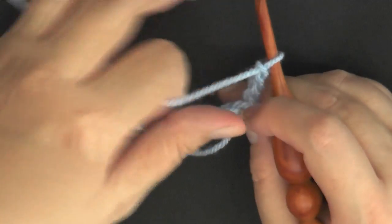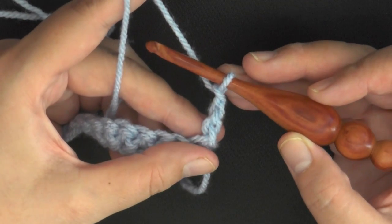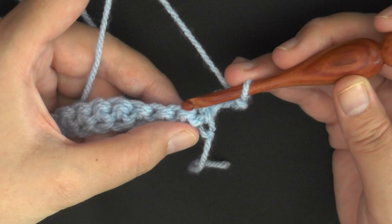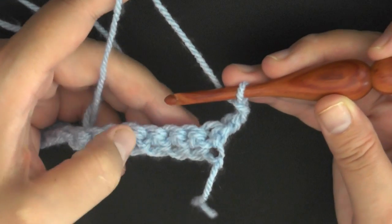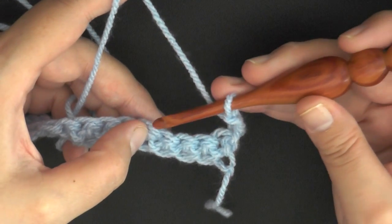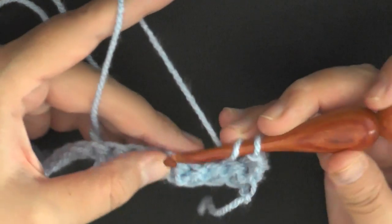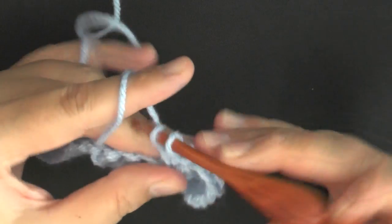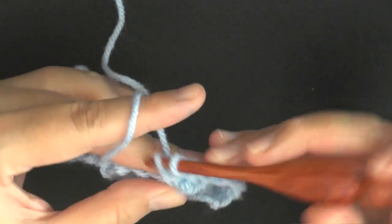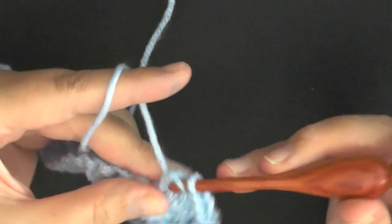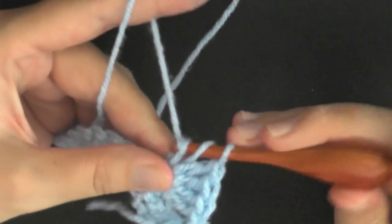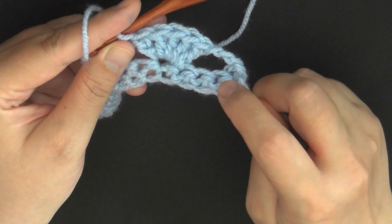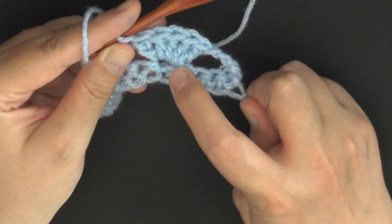And then turn, and this chain three will count as your first double crochet. Now you want to skip three stitches, and since this one counts as a stitch, you're not going to be counting this first stitch. So you'll go to the second stitch of the row and count over three: one, two, and three. So those three will be skipped. So in this fourth stitch here you're going to be doing five double crochets all worked in that same stitch to make your shell. That's three, that's four, and that's five.